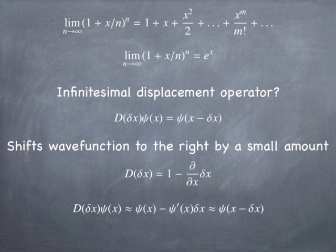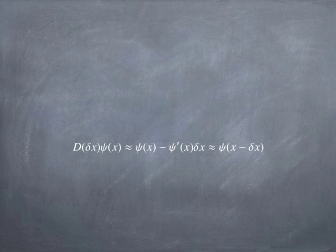Another way to look at that is through the definition of the derivative: psi of (x + delta x) minus psi of x, divided by delta x. If you solve for psi of (x + delta x), you get 1 plus the derivative times delta x. We actually want 1 minus the derivative times delta x to shift the wave function to the right. So that's the idea.